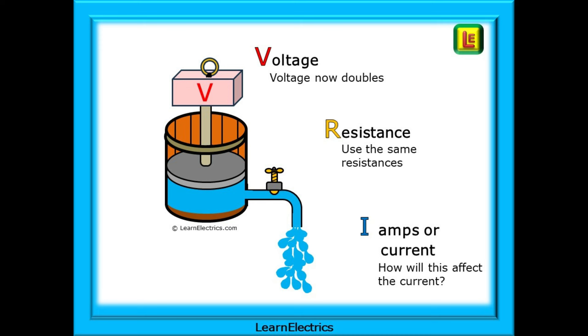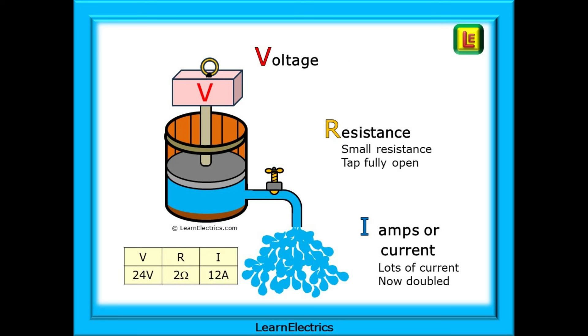What happens if we use the same resistance values, but now, we double the voltage from 12 volts to 24 volts. With the same 2 ohms of resistance, when we double the voltage, we double the current, the amps. This is the same as the tap being wide open and the mains water pressure being turned up high. More water is going to come out of the pipe.